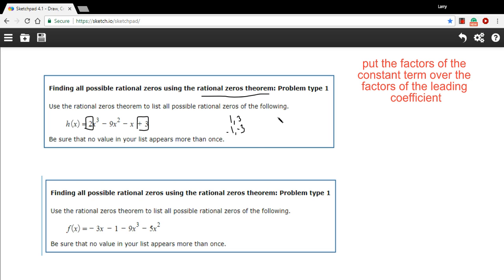If I were to list all the factors of 2, that would be 1 and 2 and -1 and -2.